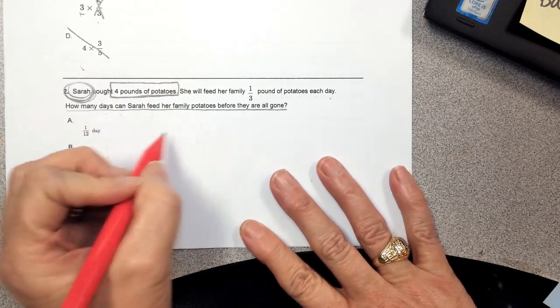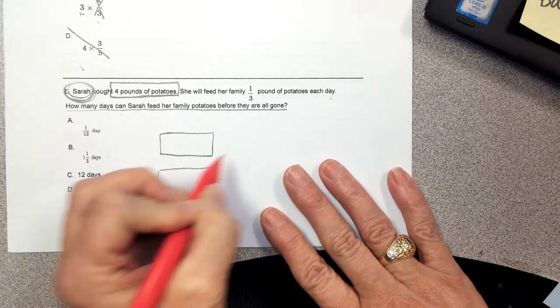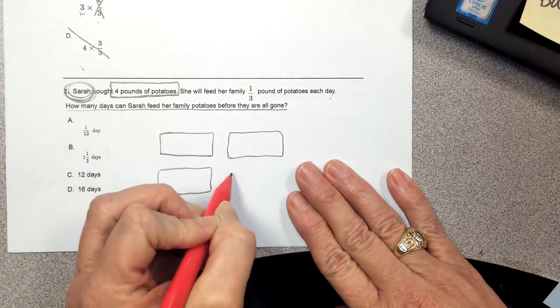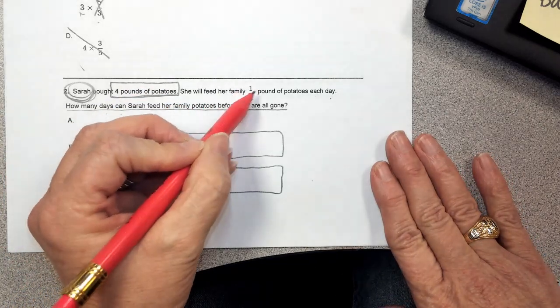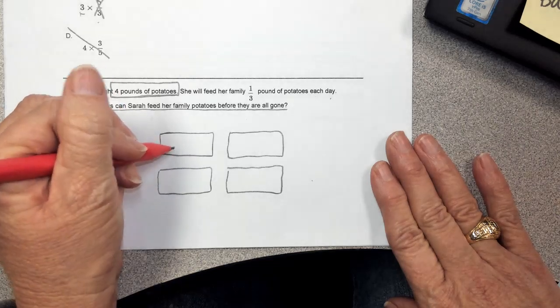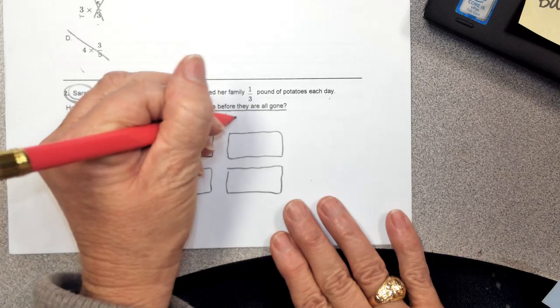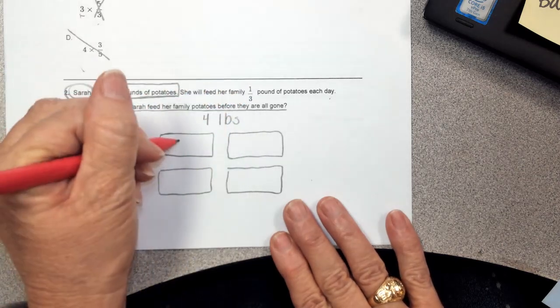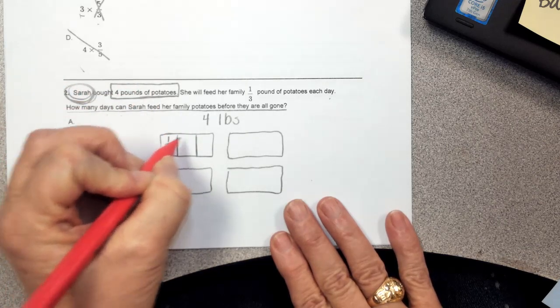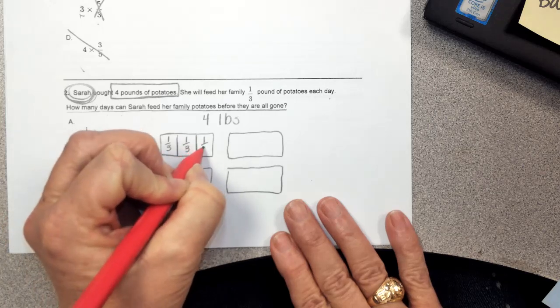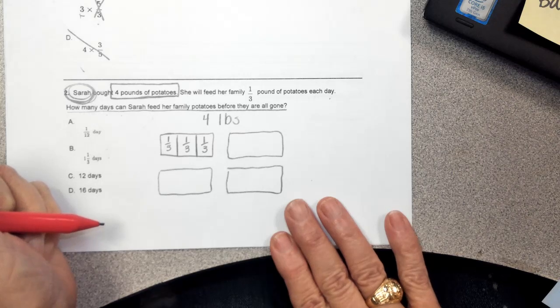So I'm going to start by drawing four pounds of potatoes. And she will feed her family one-third pound each day. So I'm going to take my first picture because this represents my four pounds, and I'm going to cut it into three equal parts. So every time I have a third, I'm going to have one day of being able to share those potatoes with my family.